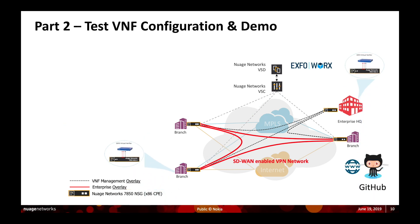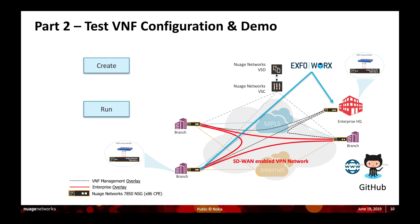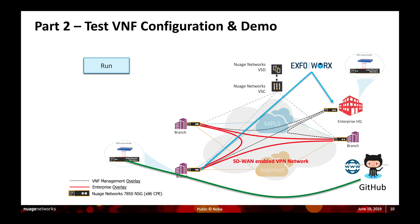The next step is VNF configuration and demo. Once we have the Virtual Verifier VNF deployed on the UCPE device, we use the ExpoVox dashboard to create on-demand tests. We run two different types of tests: the first checks connectivity of the VNF to a public service running on the internet, and the other checks inter-VNF communication. We will see a demo on how we run these different functional tests.